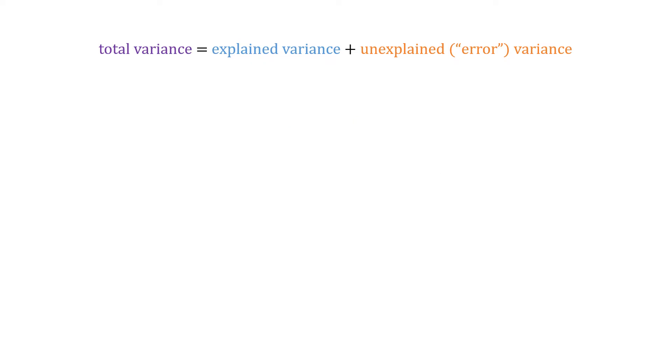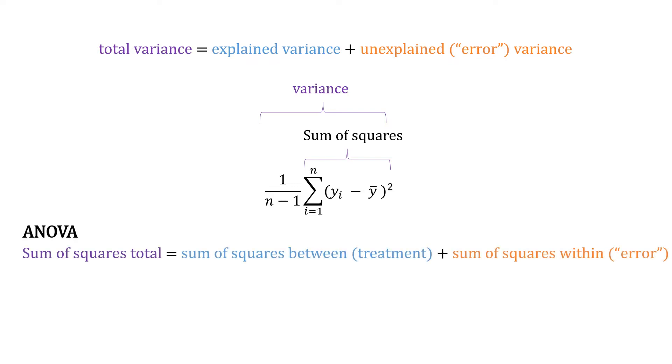This partition of variance is the same concept you do when you calculate ANOVAs with the exception that they are called sums of squares there which are however a part of the variance as seen here. In ANOVA they are called sums of squares within or error and sums of squares between or treatment which add up to form the sums of squares total. When you do the same in the context of regression the sum of squares between might be called sums of squares regression and the sums of squares within might be called sums of squares residual. We will now look at a more visual explanation for this partition of variance.